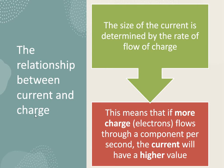Let's think now about the relationship between current and charge. The size of the current, the amount of current there is, is determined by the rate of flow of charge. We've already mentioned that before. The rate of flow of charge, how much flow of electrons there are, will determine how much current there is. So if there's more charge, more electrons flowing through a component, the current is going to be higher.